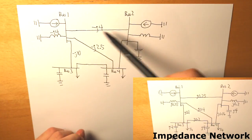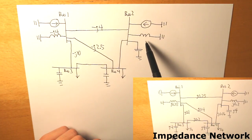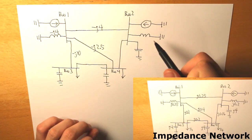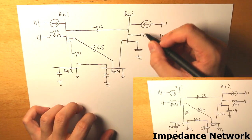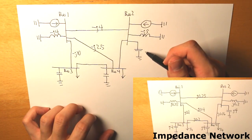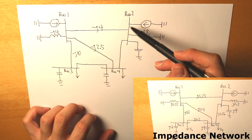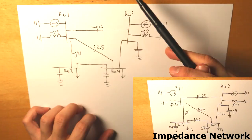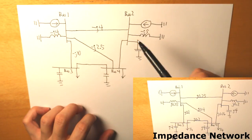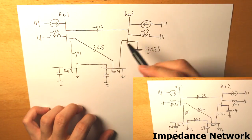Bus 2 to bus 1 is already determined. The inductance connected to bus 2 was initially j0.2, and if we take the inverse of that we get negative j over 5. For the capacitance connected from bus 2 to ground, the initial impedance is negative j4, so the admittance conversion gives positive j0.25.